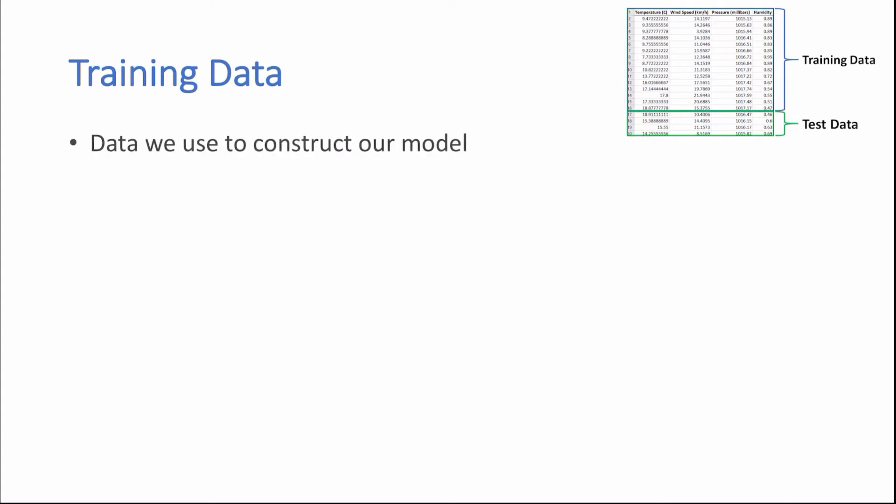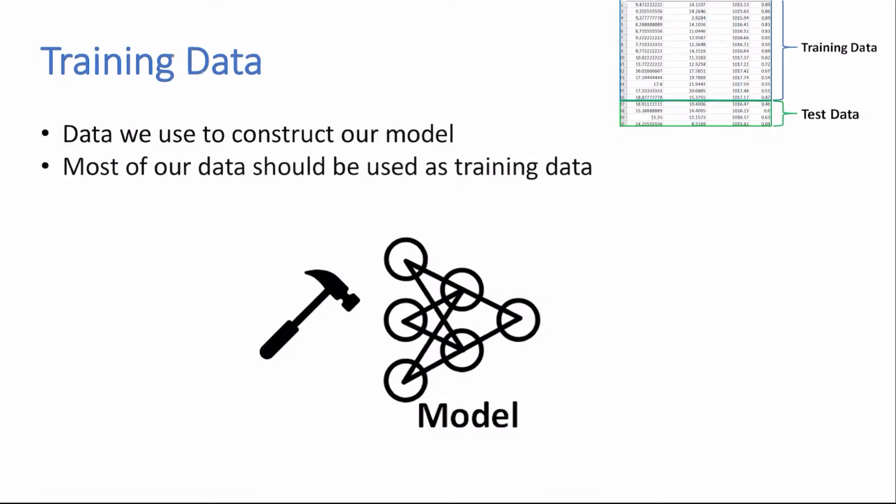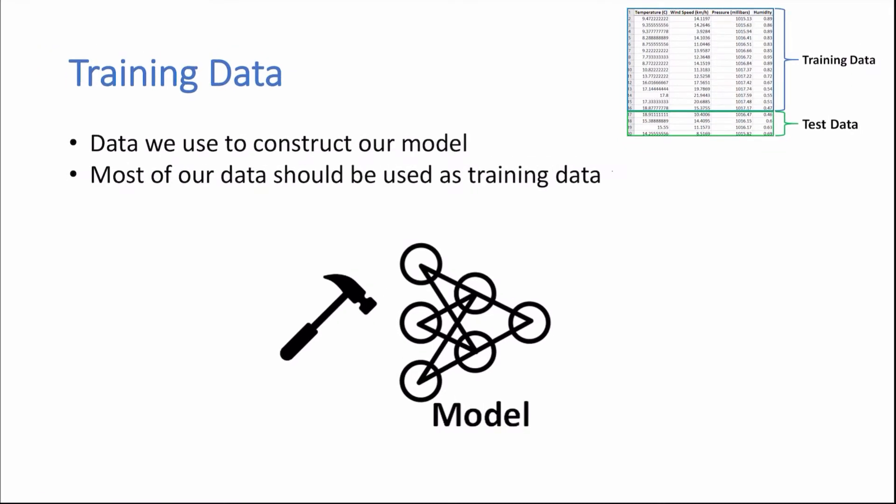So training data is the data we use to construct our model. And most of our data should be used as training data. So usually this consists of around 80% of our data.